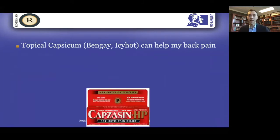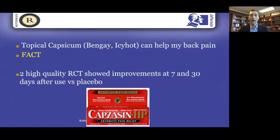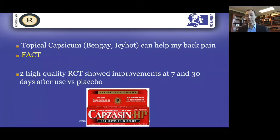What about Bengay, Icy Hot, or capsaicin? Can that help? Yes. High quality randomized controlled trials used a capsaicin plaster on people's backs and looked at them at seven days and again at a month. Using it for seven days out to a month showed improvements compared to a gel without it. I actually do recommend this for my patients — I think it can be quite helpful.